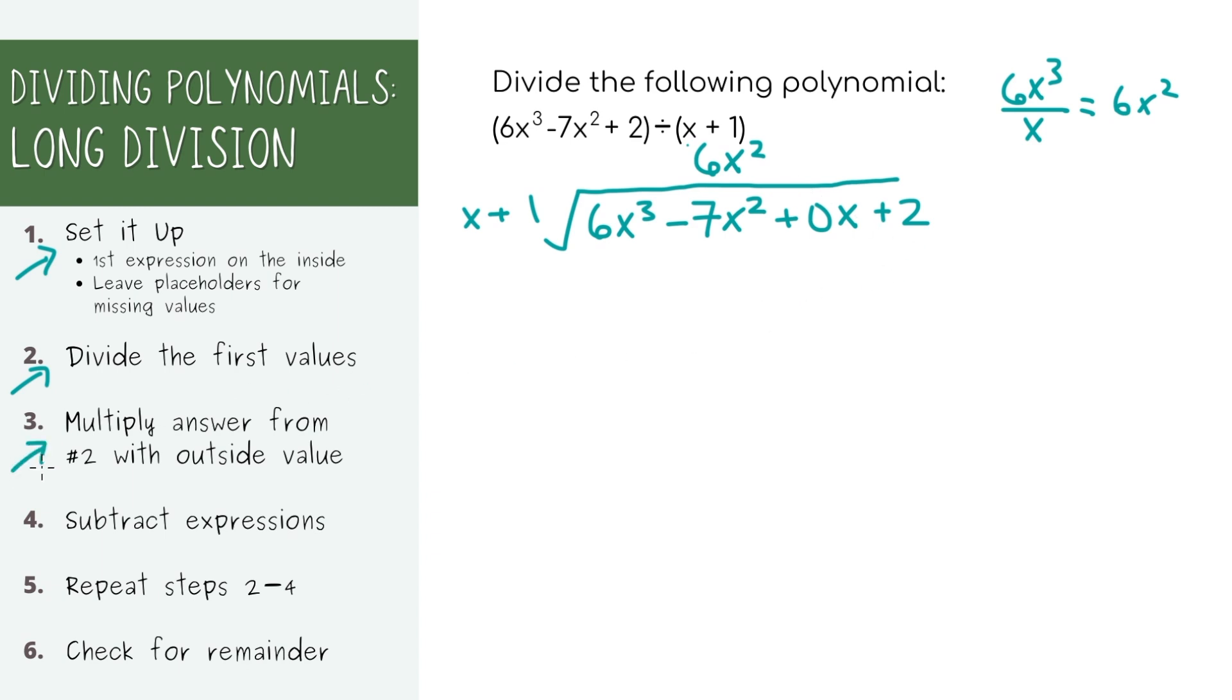For the next step, let's multiply what we just got by everything on the outside. 6x squared times x equals 6x cubed. And again, because it's a cubed value, let's put that here under this other cubed value. Then 6x squared times 1 equals 6x squared.